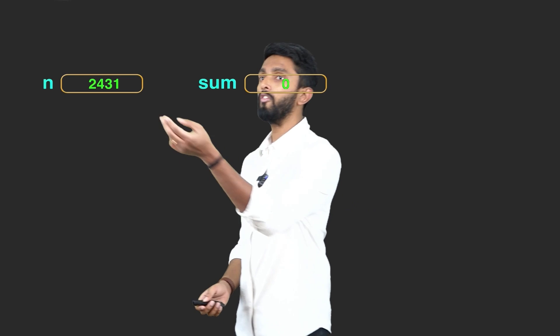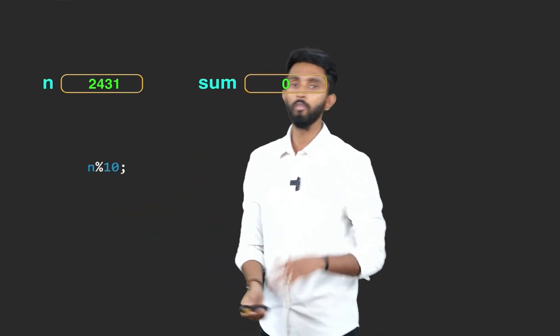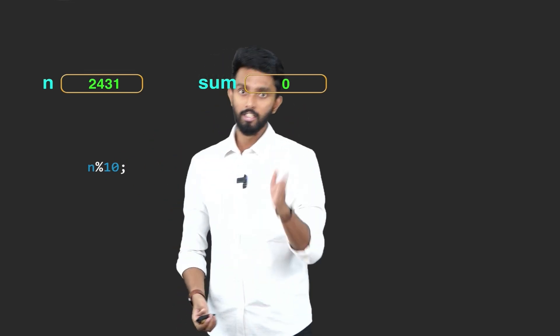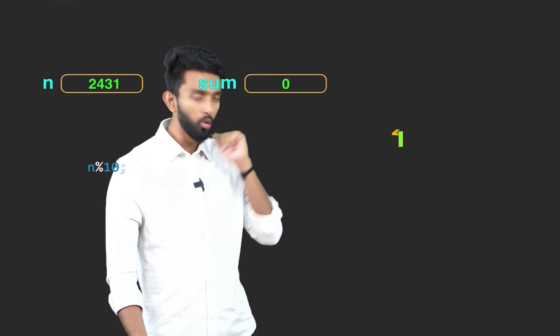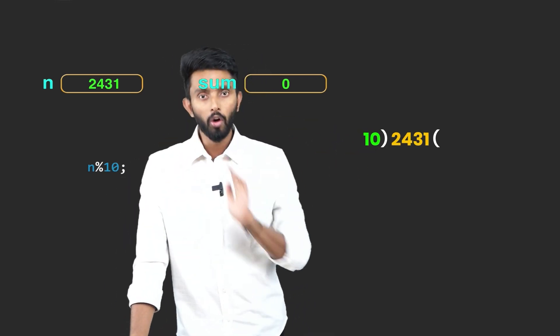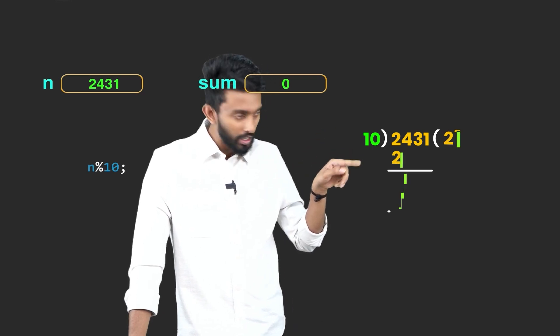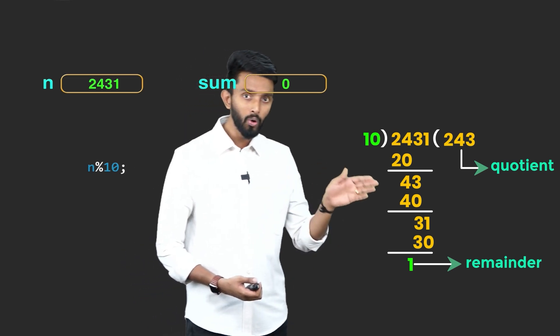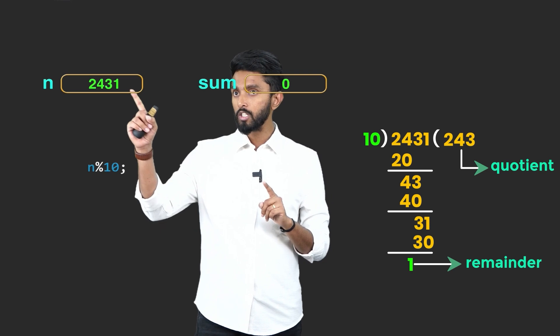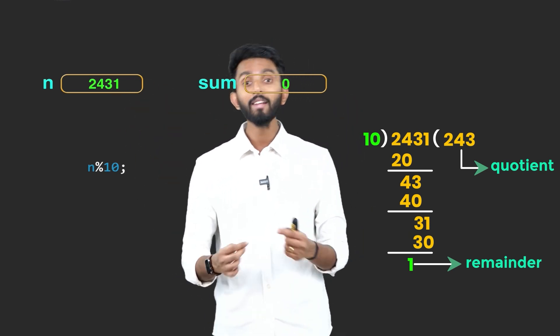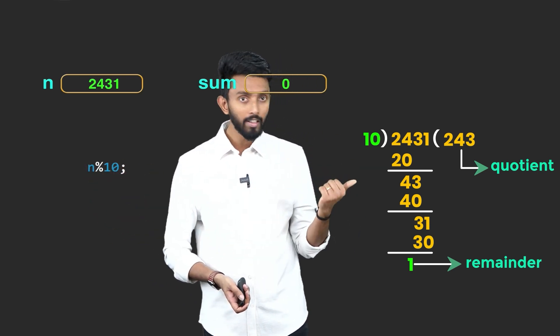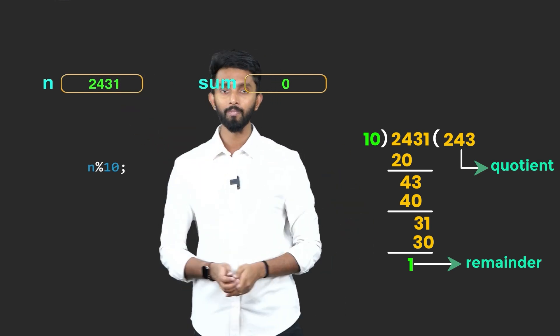Why am I focusing on always taking only the last number and removing the last number? Because this can be easily achieved in programming. For example, if you want this 1 — the last digit — here's how to do it: all you need to do is n modulo 10. The modulo operator in programming does division and gives you the remainder, not the quotient. So if n is 2431 divided by 10, the remainder is 1. And what is the last digit? 1. You see it is matching. So that is the advantage of doing n modulo 10 — the remainder will always be the last digit.